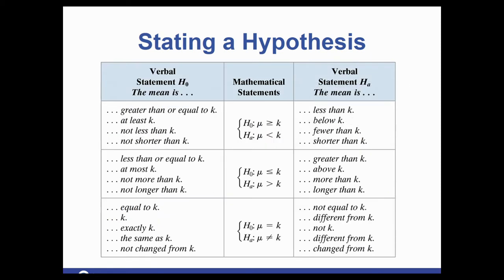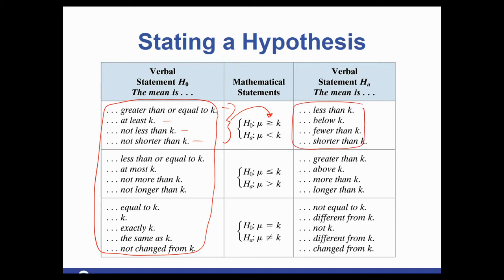This is a great slide to use as a reference later. When you're reading word problems, it helps to have this visual of which symbols go with which statements. If you have any of the statements on one side of the chart, that gives you the symbol for your H₀ — for example, 'at least,' 'not less than,' 'no shorter than,' 'greater than or equal.' Everything on the right-hand side gives all the ways to word the less than symbol. This is a great reference point in case you're ever unsure which symbol to use.